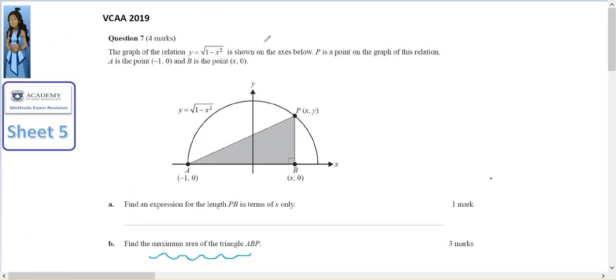So we have a graph of this semicircle, and we've got point P that sits on the relation. A is at 1, 0. B is at x, 0. So this x at point B and this x at point P have the same coordinates.